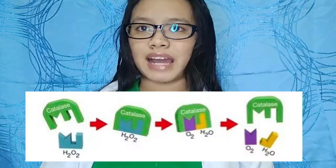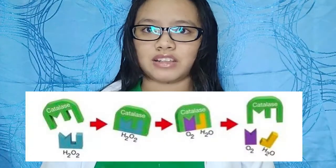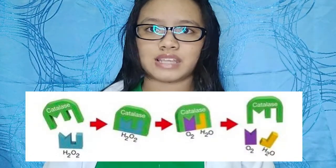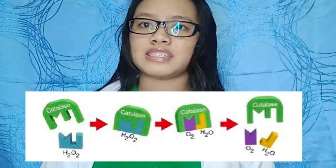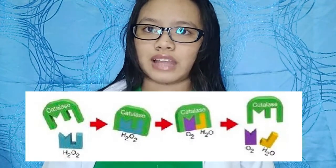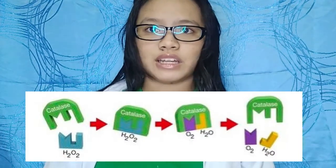In our experiment, the enzyme is the catalyst in celery and the substrate is the hydrogen peroxide. When the enzyme catalase comes in contact with the substrate, the hydrogen peroxide, it starts to break down into water and oxygen.